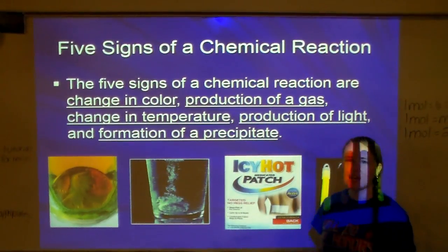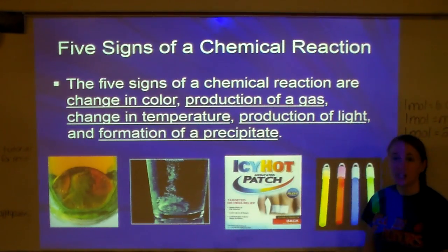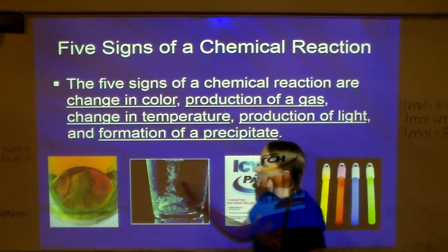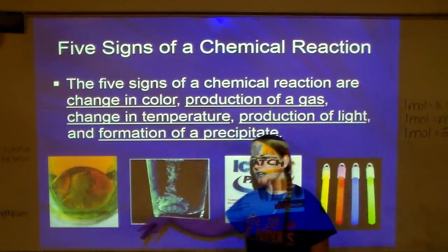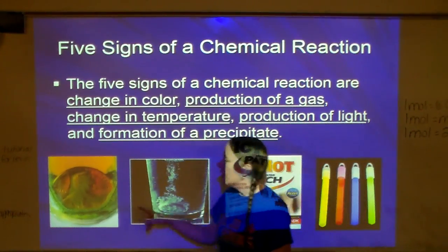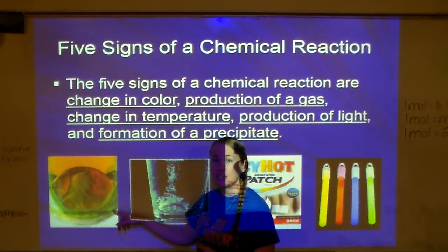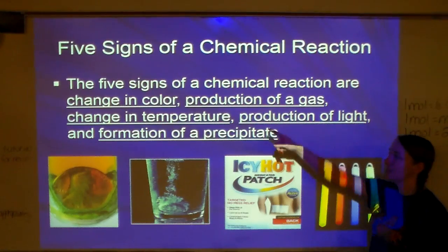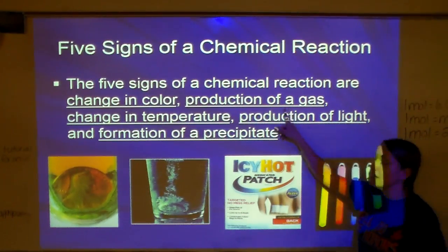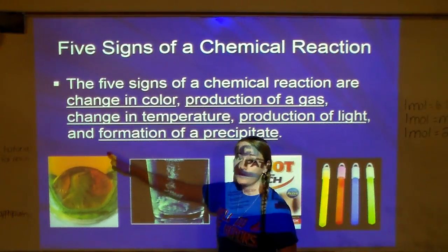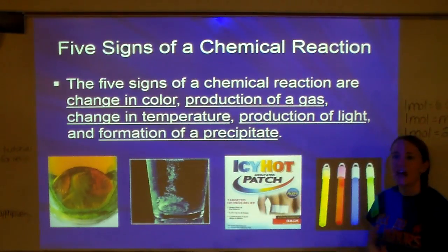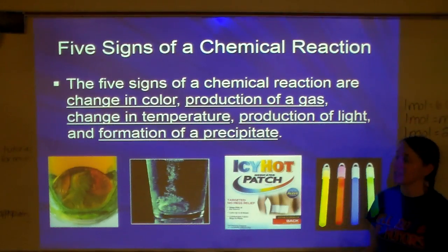There are many signs that a chemical reaction has occurred. One is a change in color. An example you've probably already seen in class is when I put copper in nitric acid — nitric acid is clear, but when I put copper in, it turned a blue-green color and also produced a brownish gas. If you see a color change, that's a sign a chemical reaction has occurred. Next is production of gas — if you see fizzing or bubbling in a liquid, that is a sign a gas is being produced, and that's a chemical reaction.